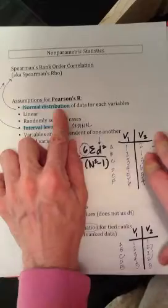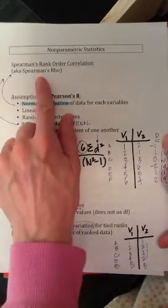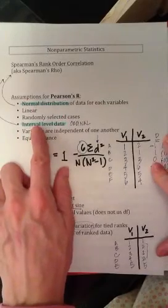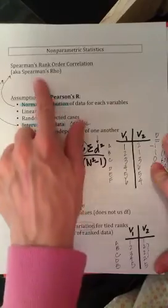So in other words, if you have data that is not normally distributed, that is skewed in one way or another, you can use Spearman's Rho. Also, if you have data that's not interval data, if that data is ordinal, you can use Spearman's Rho.